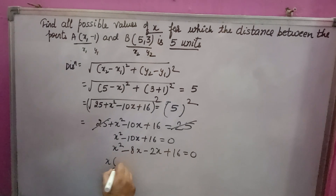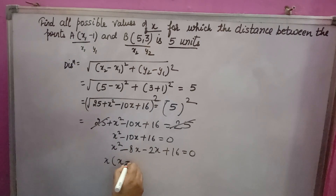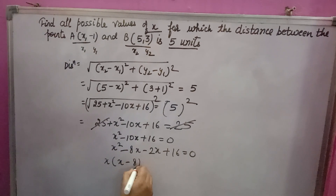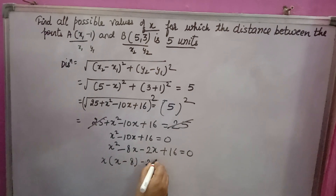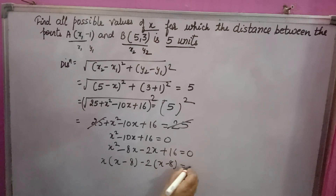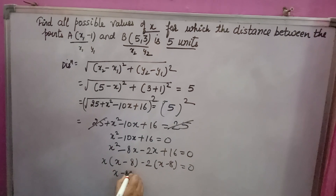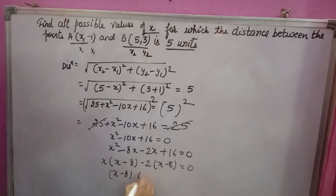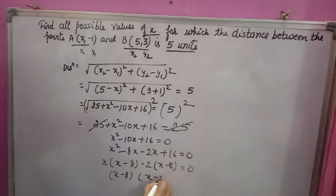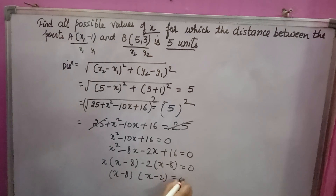Now factoring: x comma (x minus 8), here minus 2 comma (x minus 8) equal to 0. So (x minus 8)(x minus 2) equal to 0.